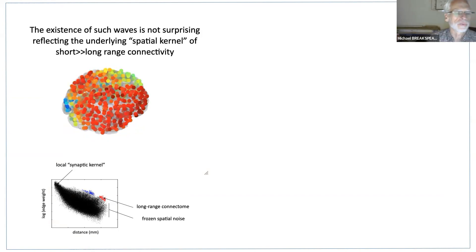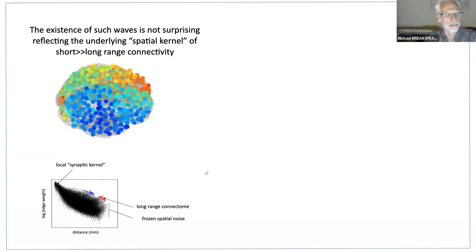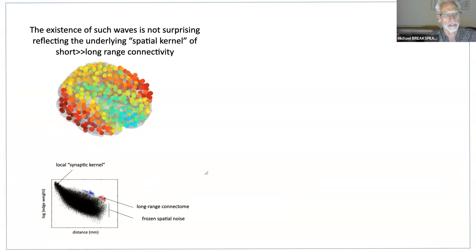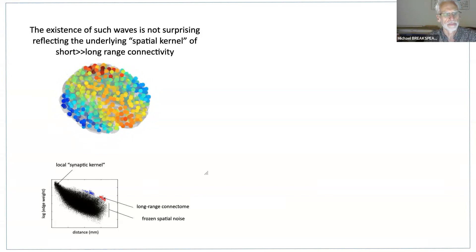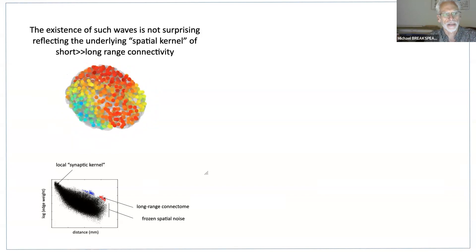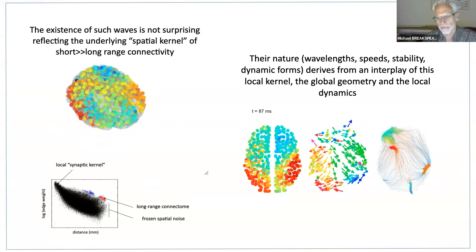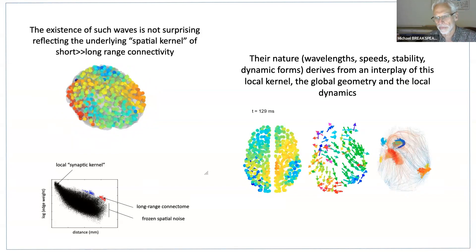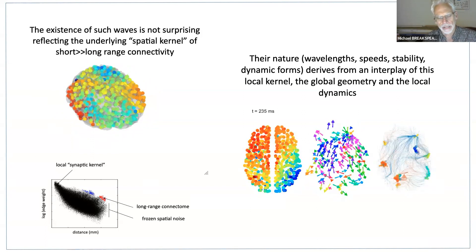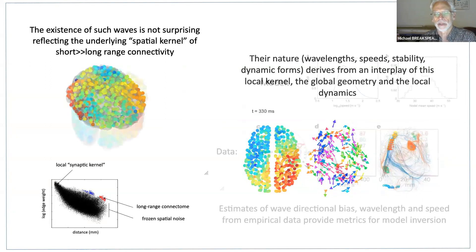This synaptic footprint is like a frozen noise — noisy but exponential — injecting stochasticity into the system along with long-range connections stronger than the background. It's not surprising to get waves, but the nature of the waves reflects the cortical geometry, the local oscillators chosen, and the nature of this synaptic footprint. We dug into the underlying dynamics of this quite deeply.